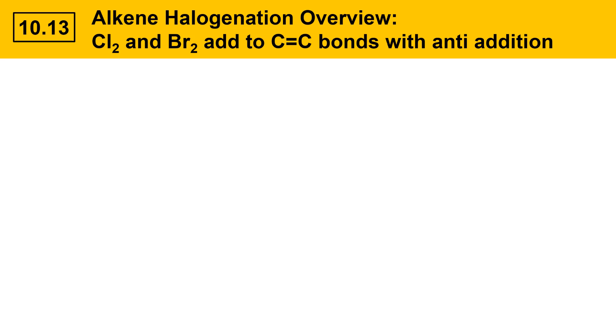This slide covers an overview of alkene halogenation. That's the addition of Cl2 and Br2 to C=C double bonds, which proceeds with anti-addition. Here's a representative alkene, cyclohexene, reacting with X2, a halogen, where X is equal to chlorine or bromine. The thing to know about bromine and chlorine is that these are electron-poor molecules.